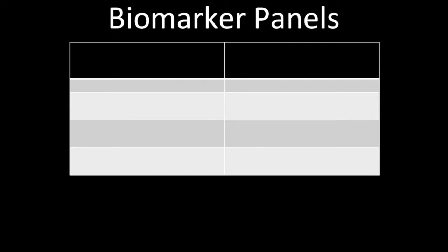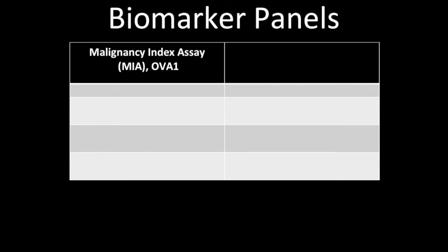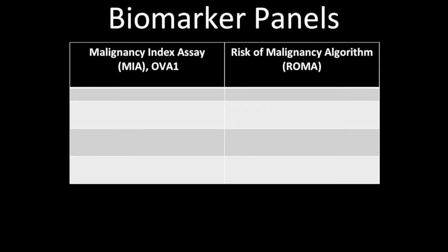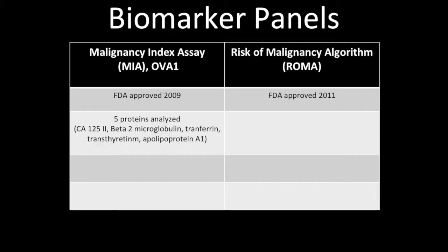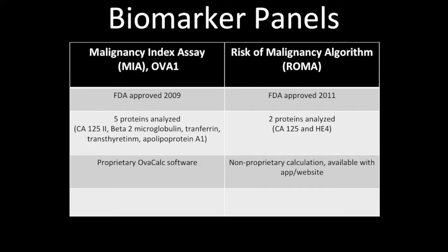The biomarker panels are the malignancy index assay, brand named OVA1, and the risk of malignancy algorithm, named ROMA. OVA1 gained FDA approval in 2009, while ROMA gained approval in 2011. OVA1 analyzes 5 proteins, while ROMA analyzes 2 proteins. OVA1 has a proprietary OvaCalc software, while ROMA has a publicly available calculation.